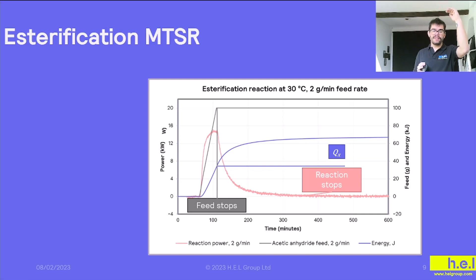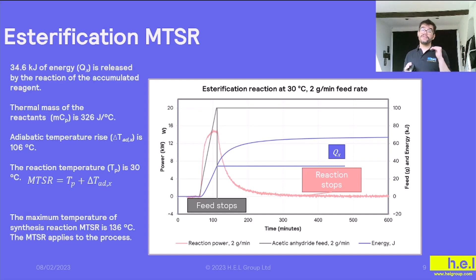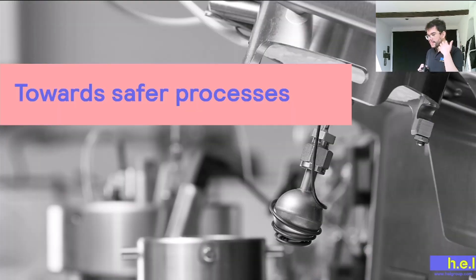So we have the measuring of heat that we had when we stopped the feed, and then we can calculate the difference between this value and the maximum value of the accumulated heat. And in this experiment that is going to be 34.6 kilojoules of energy, and we know because of the calorimetry that also our reactants' thermal mass is going to be 326 joules per centigrade. The adiabatic temperature is going to be then 34.6 times 1000 divided by 326, and it's going to be 106 degrees. Then if we add that to the 30 degrees, which is the temperature of our reactor, we're going to have a total accumulation of 136 degrees Celsius.